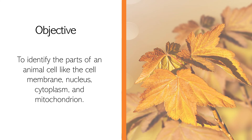We reached our objective for today. We identified the parts of an animal cell, like the cell membrane, nucleus, cytoplasm, and mitochondrion. We also included one organelle, the ribosome.